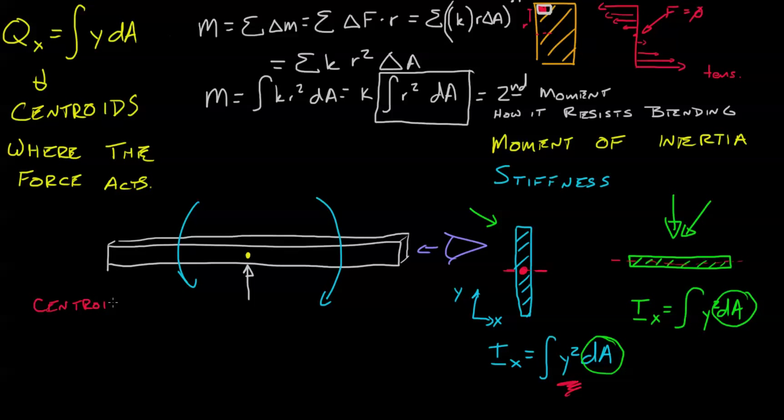This is the point where if something is given no constraints, it's just allowed to rotate however it wants, it's going to want to go through the centroidal axis.